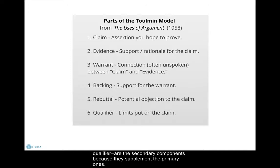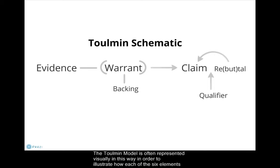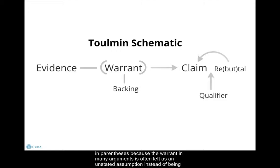The Tullman model is often represented visually in this way in order to illustrate how each of the six elements relates to and depends on each other. As you can see, the warrant sits between the evidence and the claim, but is put in parentheses because the warrant in many arguments is often left as an unstated assumption instead of being explicitly drawn out.